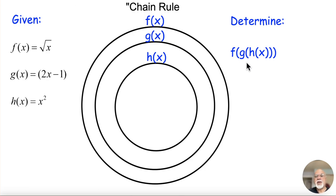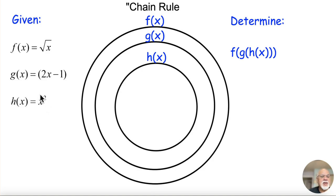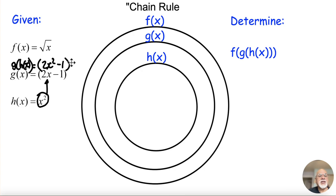So we start off by first figuring out what f of g of h of x is. Remember, f of g of h of x means I'm first going to calculate what g of h of x is, and then take that and put it into the x's of f of x. So g of h of x means take h of x and replace the x's in g of x with x squared, so that becomes 2x squared minus 1. And now taking that and putting it into the x's of f, we get f of g of h of x, which is just the square root of 2x squared minus 1.